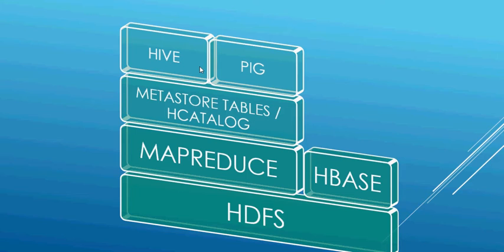We have Hive and Pig as query tools to actually query and show results in a normal SQL format. Hive is a manageable tool to write HiveQL — a query language very similar to SQL — to query the Hadoop HDFS file system. Pig is a platform for analyzing large datasets using a high-level language called Pig Latin, which is easy to use, optimized, and extensible.